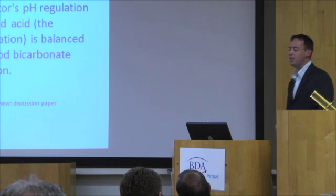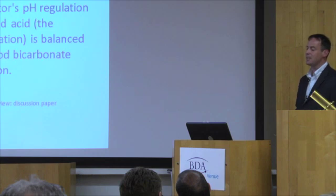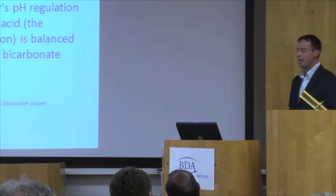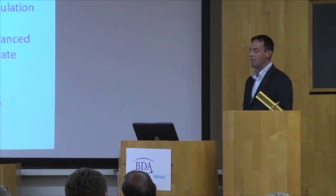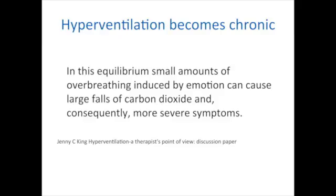The chronic hyperventilator's pH regulation is finely balanced. Diminished acid — the consequence of hyperventilation — is balanced against the low level of blood bicarbonate maintained by renal excretion. In this equilibrium, small amounts of over-breathing induced by emotion can cause large falls of carbon dioxide and consequently more severe symptoms. So the cushion has been severely reduced.